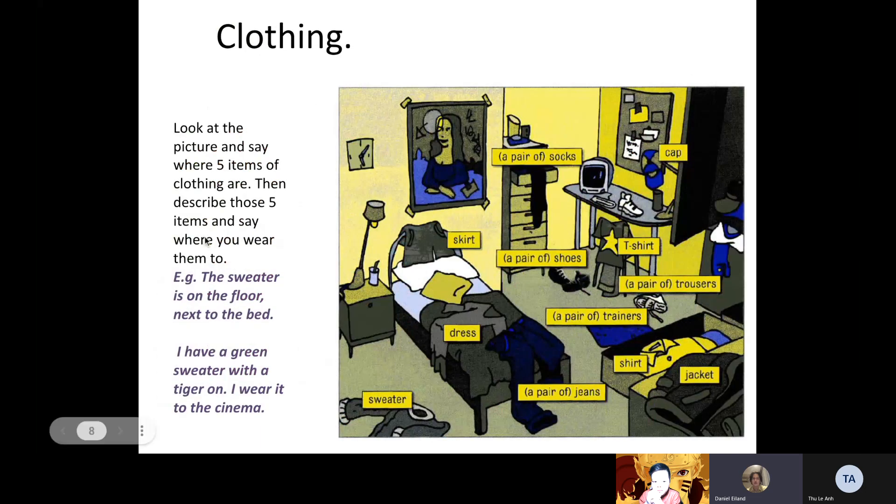And last one. Look at the picture and say where five items of clothing are. I will ask you where some clothes are. So where is the T-shirt, Hoàng Phúc? Can you see the picture? It's on the chair. It's on the chair. And do you have a T-shirt, Hoàng Phúc? Yes. Okay, what color is your T-shirt or does it have a design on it? Does it have a picture on it? Tell me about your T-shirt. I have a red T-shirt. Okay, and where do you wear your red T-shirt? I wear it at home. At home, awesome.